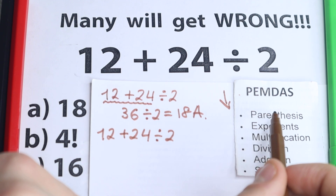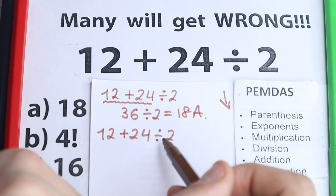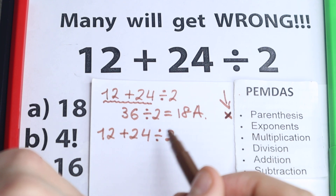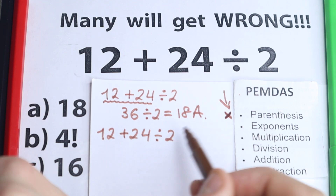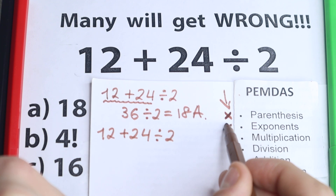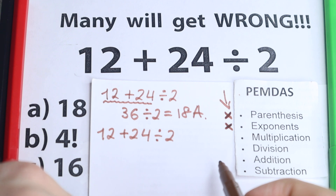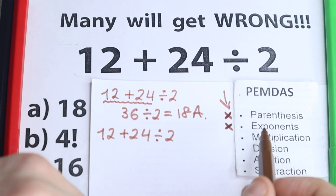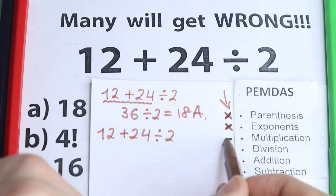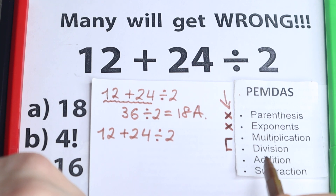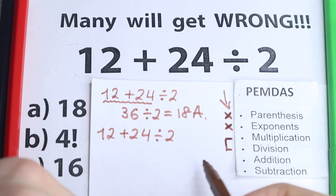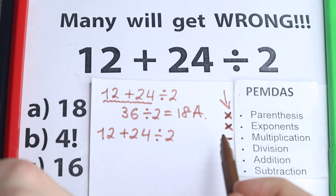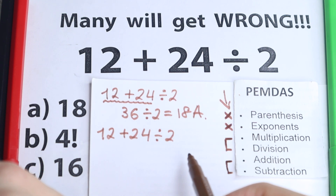Let's go step by step. First: parentheses — are there any parentheses here? No, we don't have any, so we skip to the next step. Second: exponents — squares, cubes — no, I don't see any of those either, so we skip this part. Without parentheses and exponents, which is great, we move to the next step: multiplication and division. Many students make a common mistake thinking only about multiplication, but multiplication and division form one group together, just as addition and subtraction form their own group.